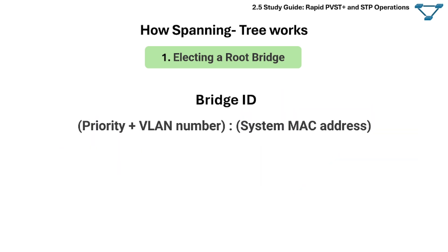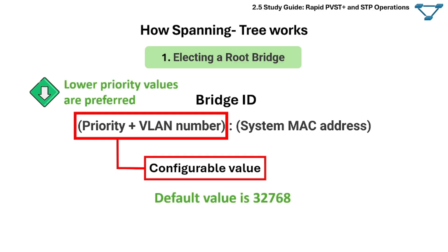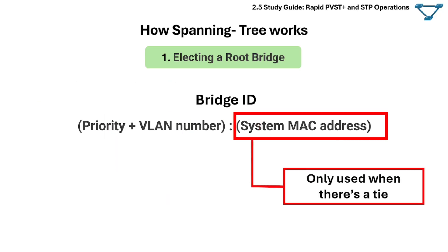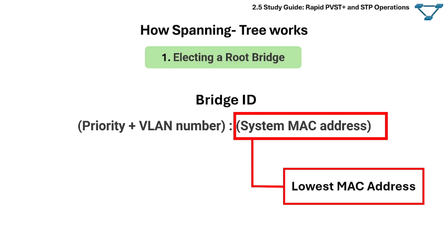The bridge ID is composed of two different value types. The first portion is a configurable priority value that allows administrators to influence the root bridge election process — lower priority values are preferred, with a default value of 32768. The second part is only used when there is a tie, meaning when two or more switches have the same priority value. This typically happens when all switches are left at their default values; in that case, the switch with the lowest system MAC address wins.